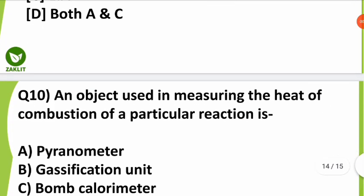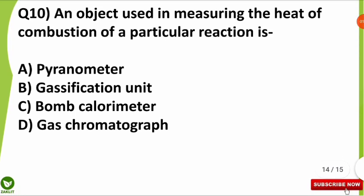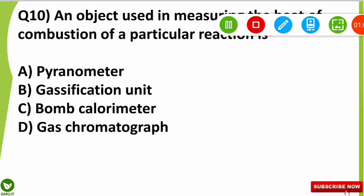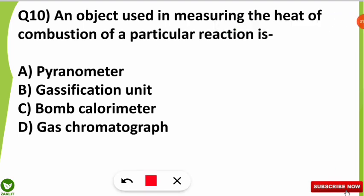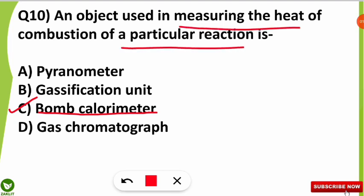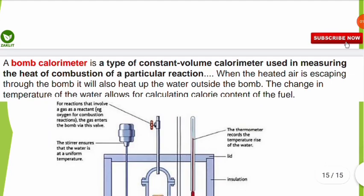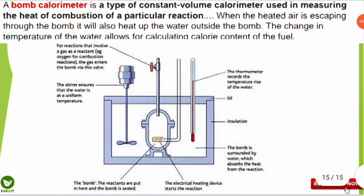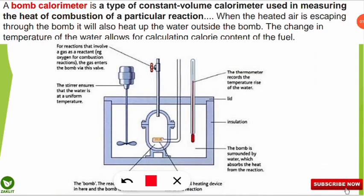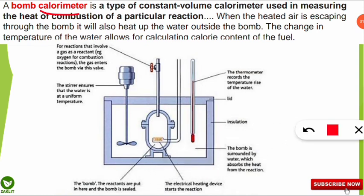The tenth question was: the object used in measuring the heat of combustion of a particular reaction is what? The correct answer is option C — the bomb calorimeter, which is used to measure the heat content of a particular reaction. A calorimeter is an object used for measuring the heat of any chemical reaction. The bomb calorimeter is a specific type of calorimeter — it is a constant volume calorimeter.